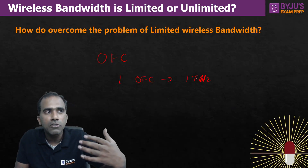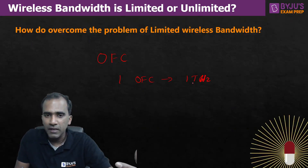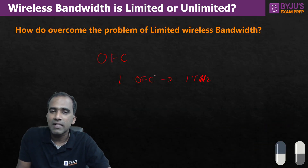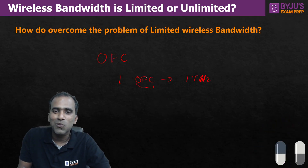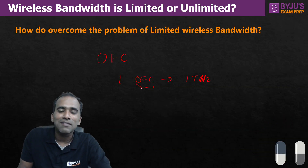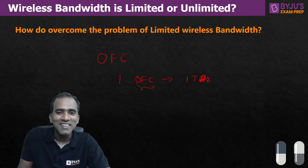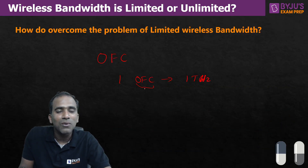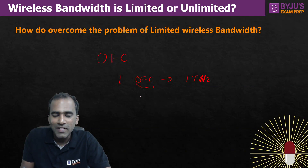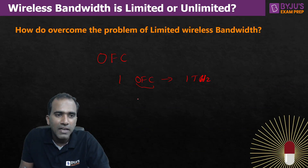Based on the design of the optical fiber cable, the bandwidth can range from hundreds of gigahertz to 10–20 terahertz. You can see that one optical fiber cable has more bandwidth than the entire wireless bandwidth. That's how much optical fiber cable helps us in communication.